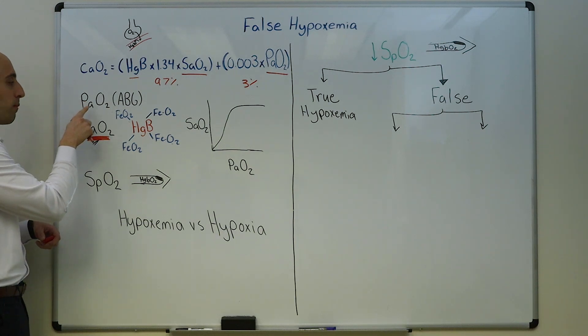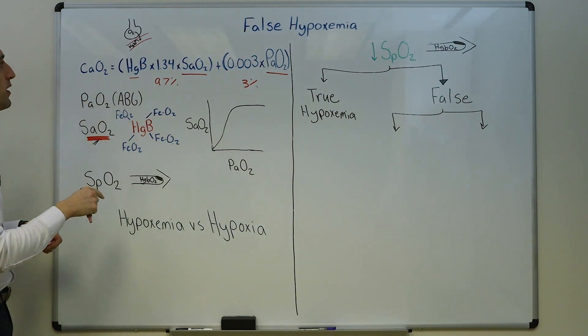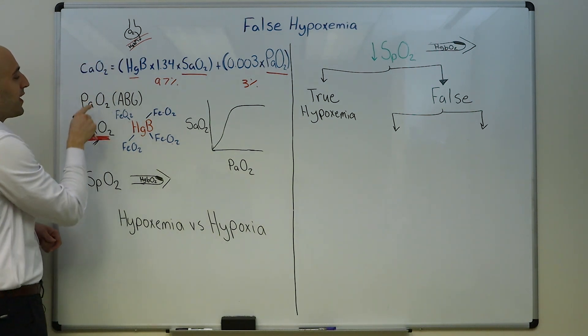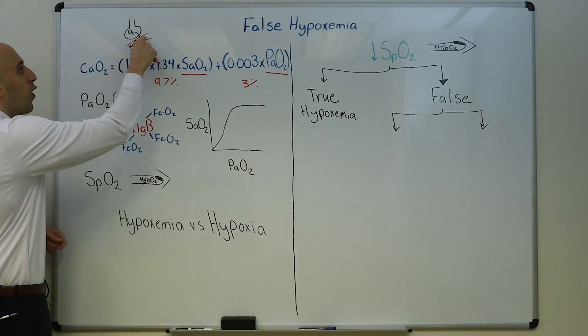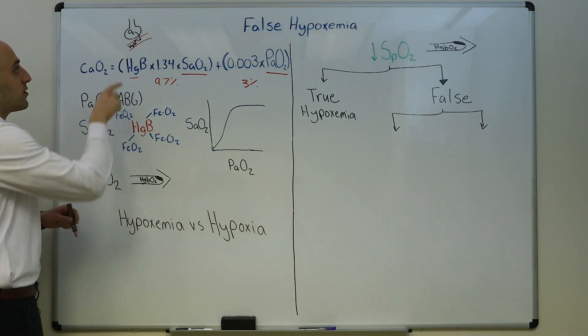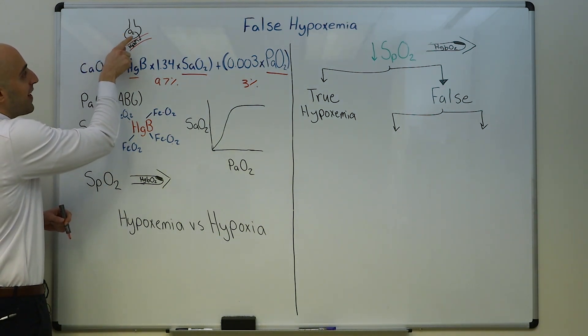Something that's striking by this formula is that this partial pressure of oxygen only accounts for three percent of the total oxygen in the blood, while the hemoglobin and the oxygen saturation of hemoglobin accounts for 97 percent.